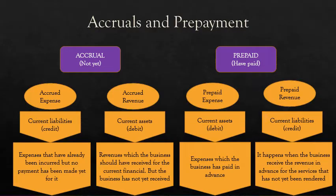For prepaid revenue, it's something that you should not have yet received but your customer has already paid you. So now you are the one who owes that person. Since you owe them, it is a current liability, so please put it on the credit side of the journal entry.